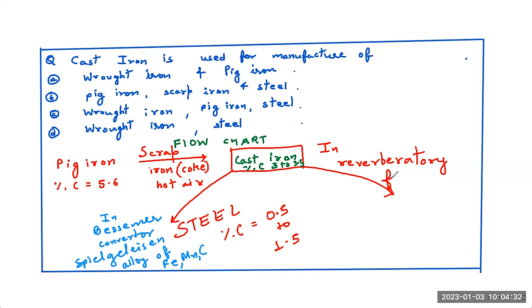We're making use of spiegeleisen, an alloy of iron, manganese, carbon. Then what we get is steel. Which contains carbon 0.5 to 1.5 percent. If I pass this cast iron in a reverberatory furnace with oxygen, then what I get is wrought iron. Where the percentage of carbon is 0.2 to 0.5 percent. I think the flow chart is self-explanatory. As you can see, it is used for the manufacture of steel and wrought iron. Steel and wrought iron is the option D.